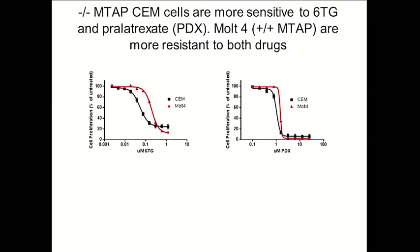As an example, if we take a cell line which lacks MTAP — the CEM cell line — and compare it to another cell line which has MTAP, there is a marked difference in sensitivity to 6-thioguanine, a de novo inhibitor of purine biosynthesis. There's also a difference in sensitivity to pralatrexate, a methotrexate analog used to treat T-cell lymphoma.